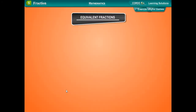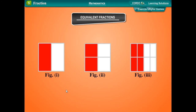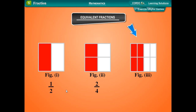Equivalent fractions. Look at the adjoining figures. Figure 1 has been divided into 2 equal parts and the shaded part represents 1 upon 2. Figure 2 has been divided into 4 equal parts; out of 4, 2 parts have been shaded, representing the fraction 2 upon 4. Figure 3 has been divided into 8 equal parts; out of 8 parts, 4 parts have been shaded, representing the fraction 4 upon 8.